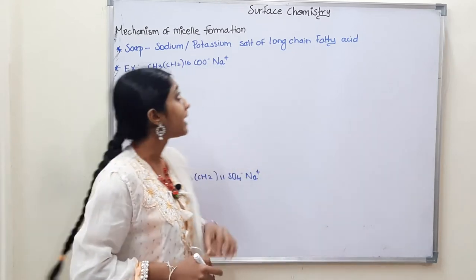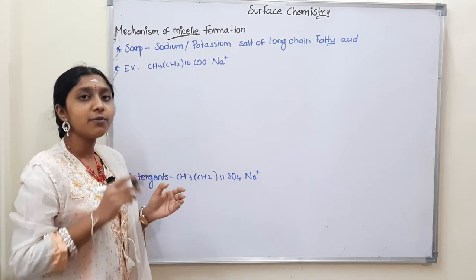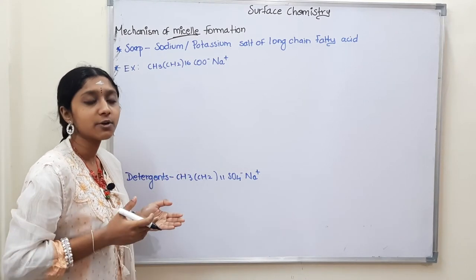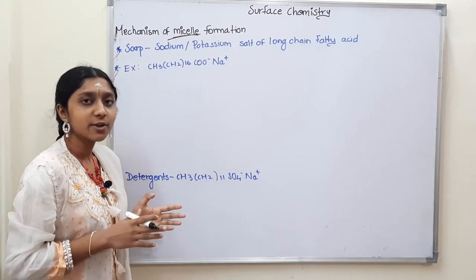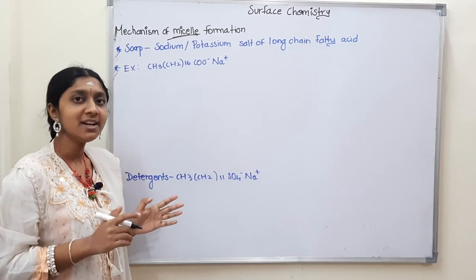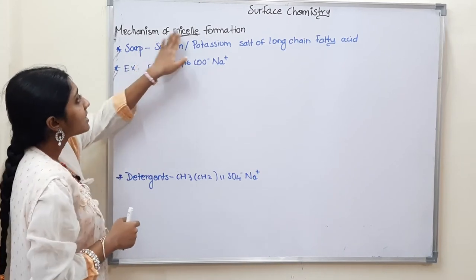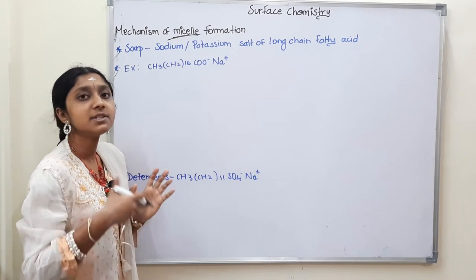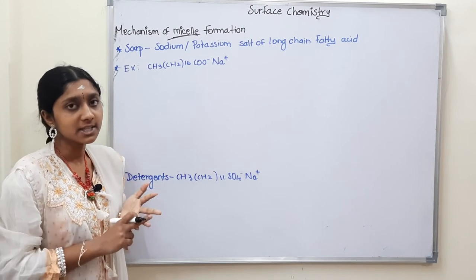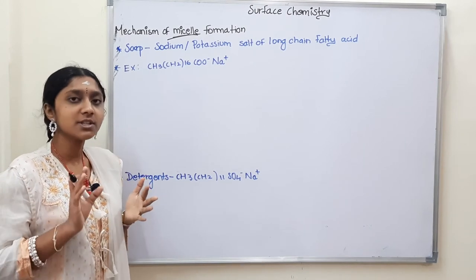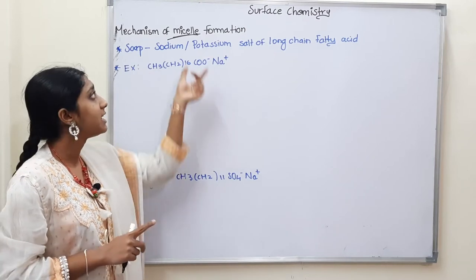So we are going to see today the Mechanism of Micelle Formation. What is Micelle Formation? That is a form of associated colloids. Associated colloids is an example of micelle — I have already told you in the video of associated colloids, please check the link in the description. So, mechanism of Micelle Formation. Where is micelle formed? In soap and detergents — that is correct. In the example of associated colloids, soap and detergents form micelles.